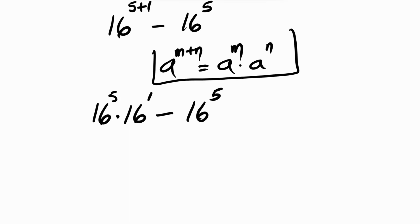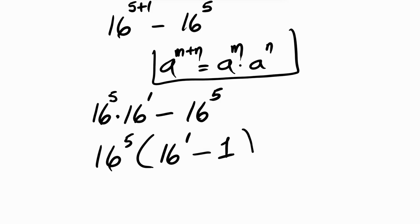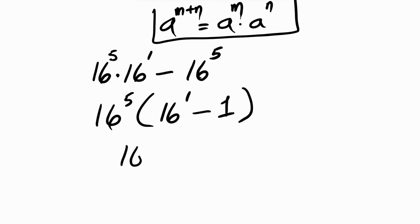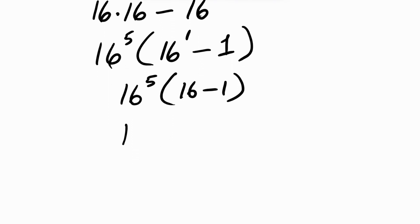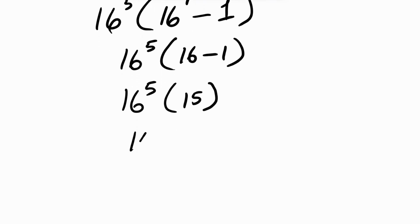Now we have a common factor of 16 raised to power 5, so let's factorize. We get 16⁵ times (16¹ minus 1), which is 16⁵ times (16 minus 1), and that gives us 16⁵ times 15.